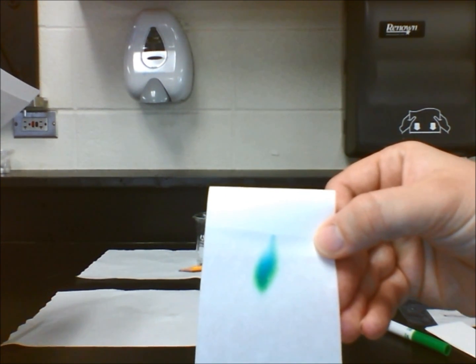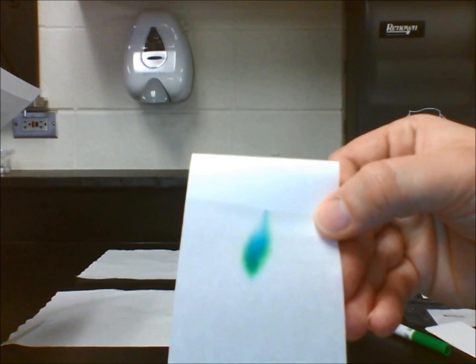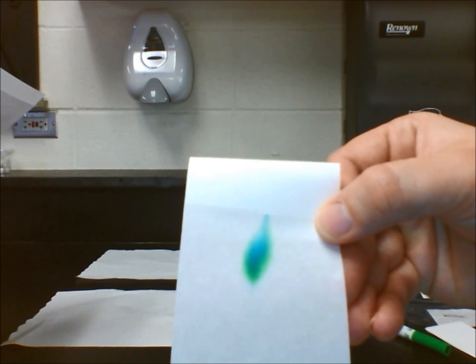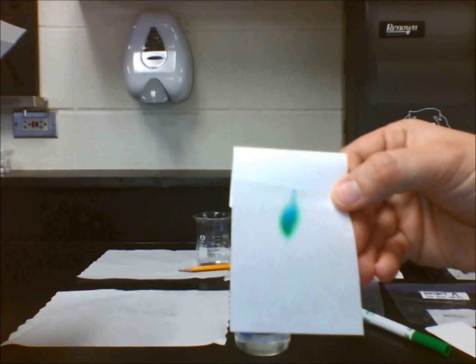The solutes that make up the green ink are being separated by the water passing through the chromatography paper. We can therefore conclude that the green marker is made up of two different solutes, blue and yellow.